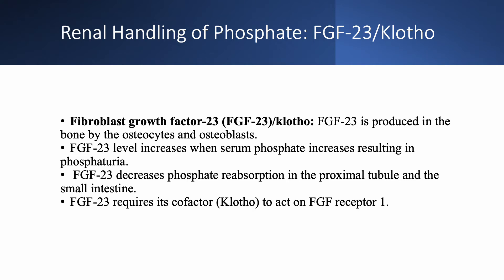Let's talk about fibroblast growth factor 23 and clotho. FGF23 is produced in the bone by osteocytes and osteoblasts. When serum phosphate starts to increase — early in chronic kidney disease — FGF23 rises, leading to phosphaturia, meaning more phosphate excretion in the urine and a return of phosphate toward normal. FGF23 decreases phosphate reabsorption in the proximal tubule and the small intestine. For FGF23 to work, it needs clotho as a cofactor to bind to FGF receptor 1 — so they always work together.